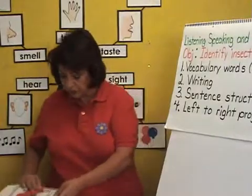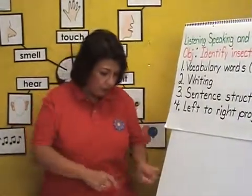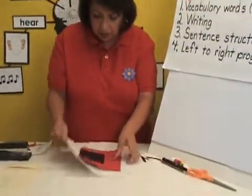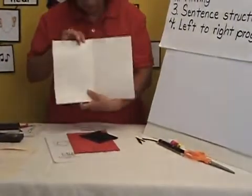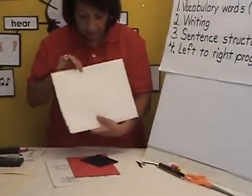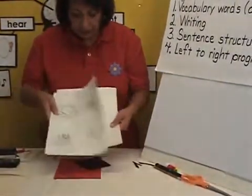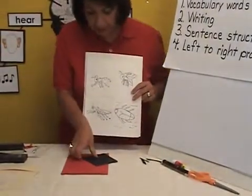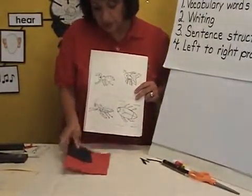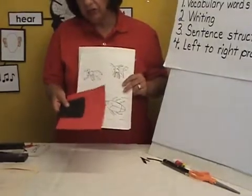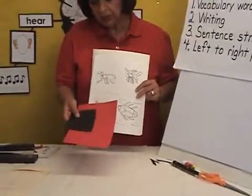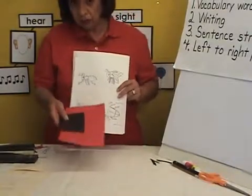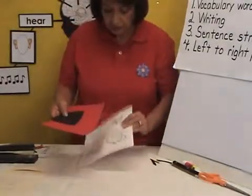The materials needed for this activity are: you're going to need two sheets of white construction paper, the activity sheet of the insects, and construction paper. I have chosen red, but you can have different colors, because they're going to be using this to illustrate the cover of the booklet.